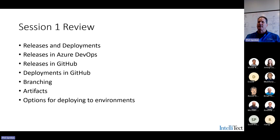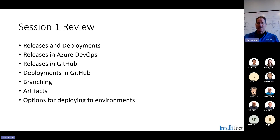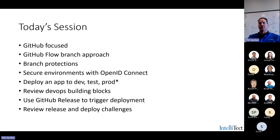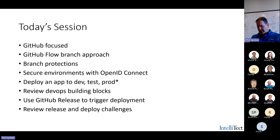We covered what a release is, what a deployment is, the different definitions across different products, what releases mean in DevOps and GitHub. We talked a bit about branching — I want to revisit that because it's a fairly important topic. We talked a little about artifacts and options for deploying to environments. Today I'd like to slow down a little, and start getting into topics related to deployment specifically in GitHub. I'm leaving Azure DevOps alone for a while.